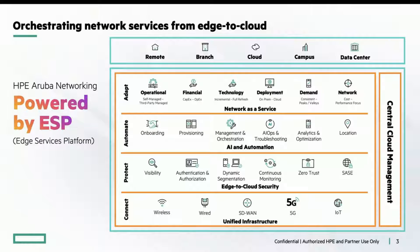The ESP architecture is typically illustrated using a multi-layered cake. The Connect layer describes the traditional networking technologies used to connect users and devices into a network. These include Wi-Fi, Ethernet, private 5G, and IoT solutions.